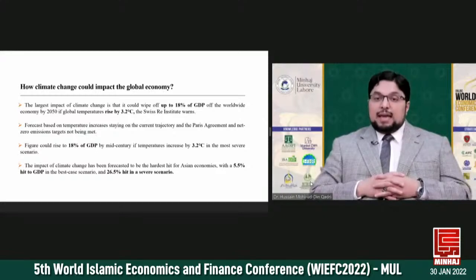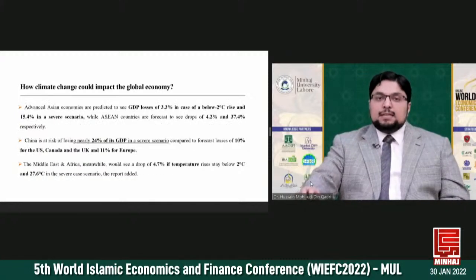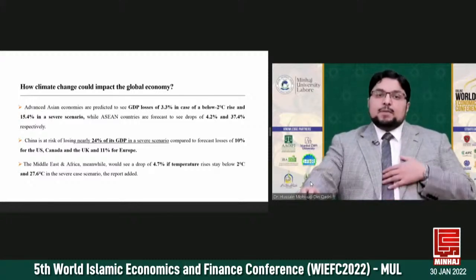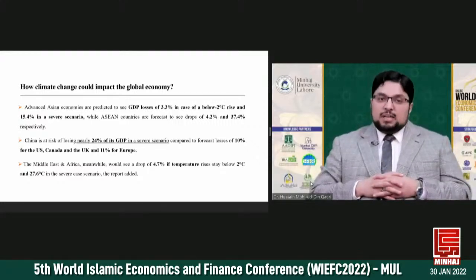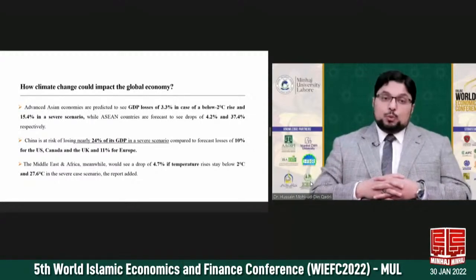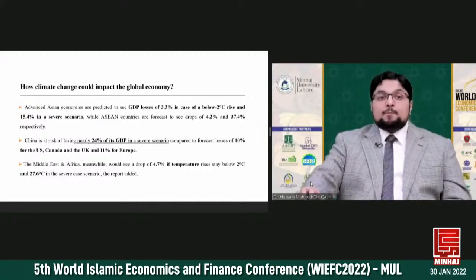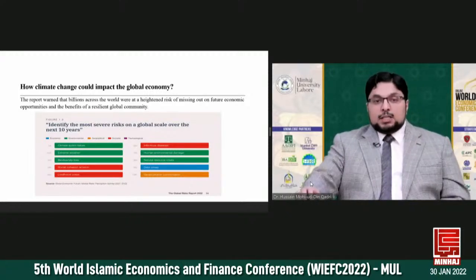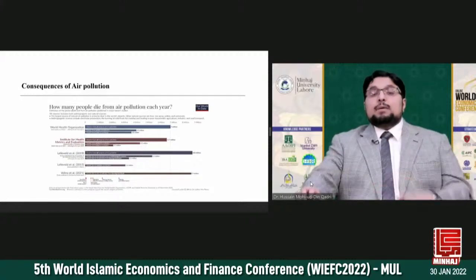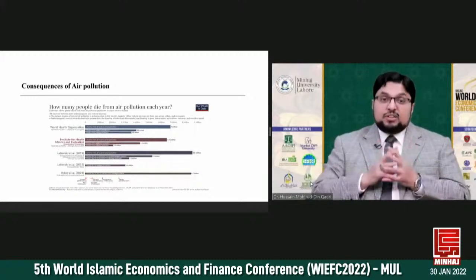Global warming will affect 48 countries representing 90% of the world economy. This effect of climate change has been forecasted to be hardest for Asian economies, with a 5.5% hit to GDP in the best-case scenario and a 26.5% hit in a severe scenario. China is at risk of losing nearly 24% of its GDP in a severe scenario, compared to forecast losses of 10% for the US, Canada, and UK, and 11% for Europe. Exposure to air pollutants increases the risk of developing diseases in three major categories: cardiovascular diseases, respiratory diseases, and cancer.